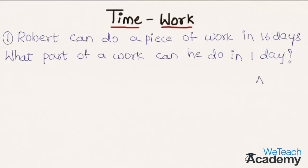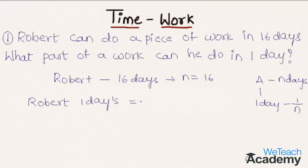We know that if A can do a piece of work in n days, then his one day work would be 1/n. According to the problem, Robert can do a piece of work in 16 days, so n equals 16. Robert's one day work would be 1/n, that is 1/16.